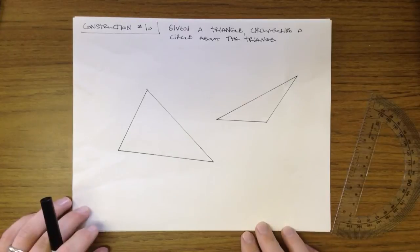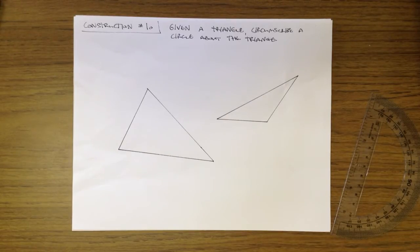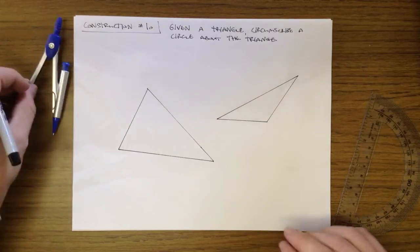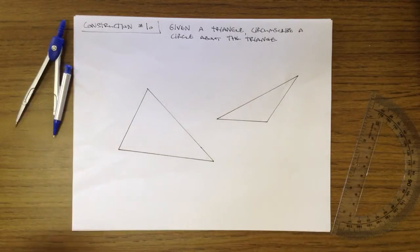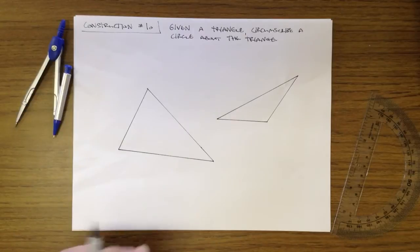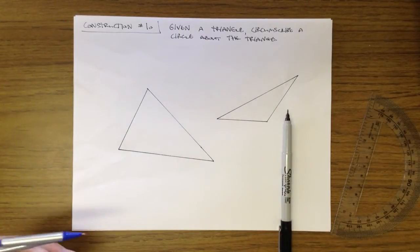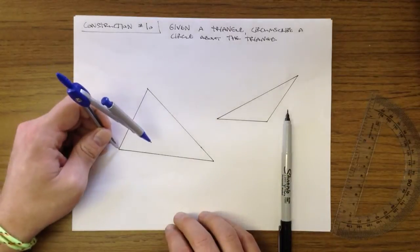The way we do that goes back to things we talked about a long time ago. When you have a triangle, if you draw the perpendicular bisectors of each side, those perpendicular bisectors are concurrent. They're going to meet at a specific point either inside or outside of your triangle, and that point is going to be equidistant from all your endpoints.